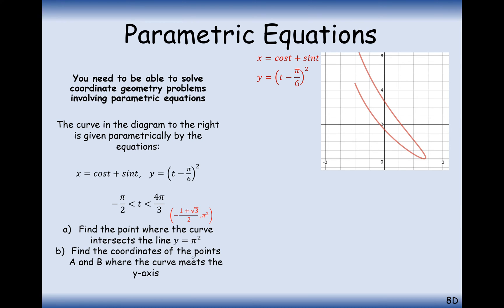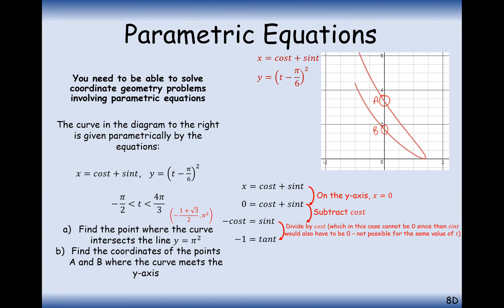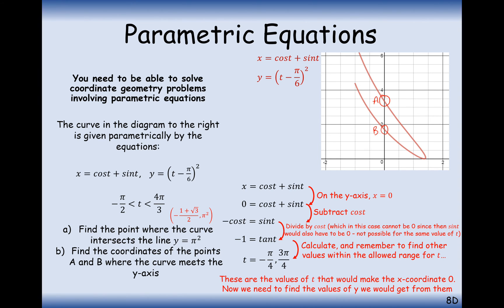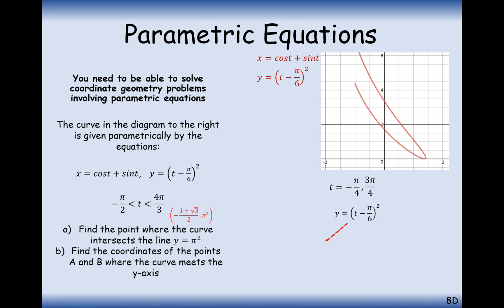Now find coordinates A and B where the curve meets the y axis. When the curve is on the y axis, x equals zero. Setting cos t plus sin t equal to zero and dividing through by cos t gives tan t equals minus one. So t equals minus π/4 or 3π/4 — both inside the range, giving two intersections. Plugging these into the y equation gives y equals 25π squared over 144 and y equals 121π squared over 144.